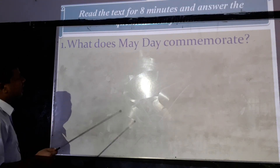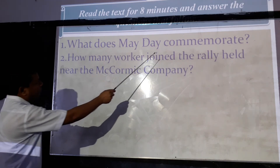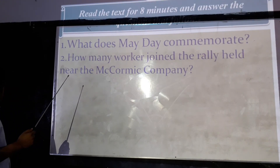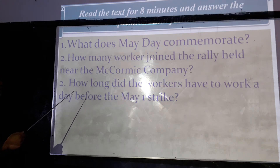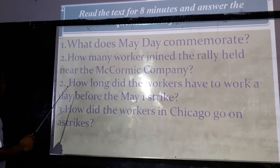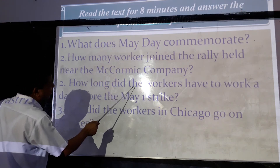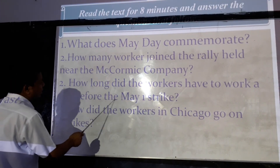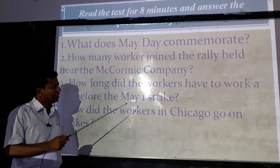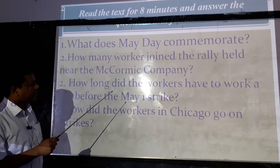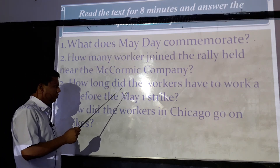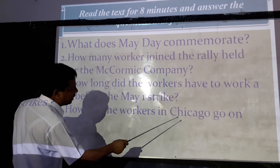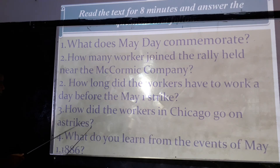Read the text for a few minutes and answer the questions. What does 'equivalent' mean? In 1886, how many workers were injured near the MCC company? Question 3: how long did the workers have to work per day before the May Day work strike? Before May Day, all workers of mills and factories had to work 18 hours or even more per day. How did the workers in Chicago go on strike? What do you learn from the events of May 1886?